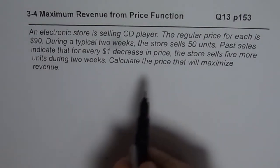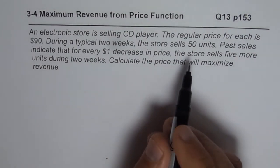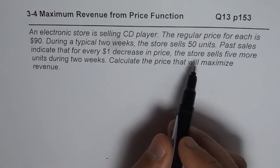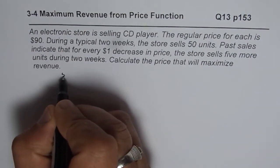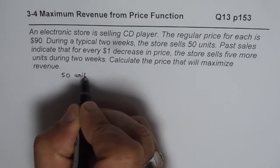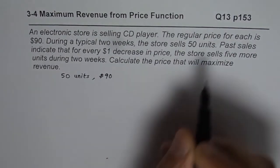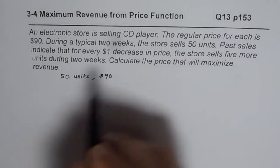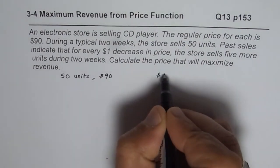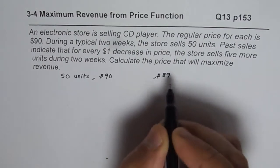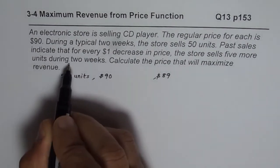So first thing is, we need to find the price function or the demand function. What we are given here is that at the regular price of $90, 50 units are sold. So let's say 50 units are sold for $90. And then it is also given that for every $1 decrease, that means if I decrease this price from $90 to, let's say, $89, in that case, store sells 5 more units. And the time period is 2 weeks.